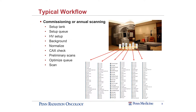When I set up the tank for either a commissioning machine or performing the annual scanning, there's your basic tank setup. I also have to find my scanning queue. We usually go through high voltage setup, we run the background, some normalization. We also do a CACS check to check the centering of our chamber. I also like to run some preliminary scans, usually in an energy that I'm familiar with, where I know what either the profile parameters should be or the PDD value should be for certain depths, just to check my setup and to get comfortable and know everything's okay before I go ahead and launch my scanning queue.